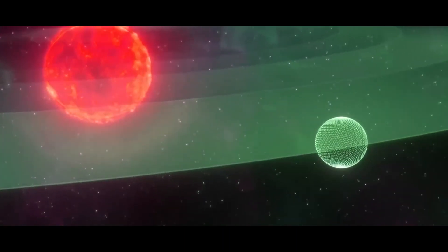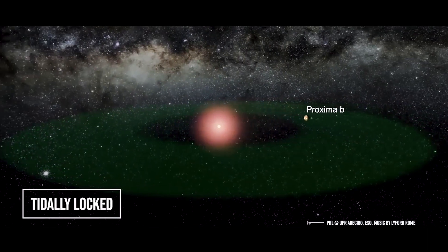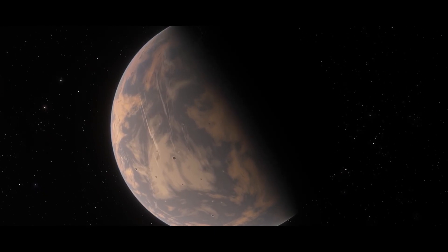Because Proxima B's orbit is so close to that of Proxima Centauri, the planet could be tidally locked, with one side always facing the star and receiving light, and the other always in the dark.